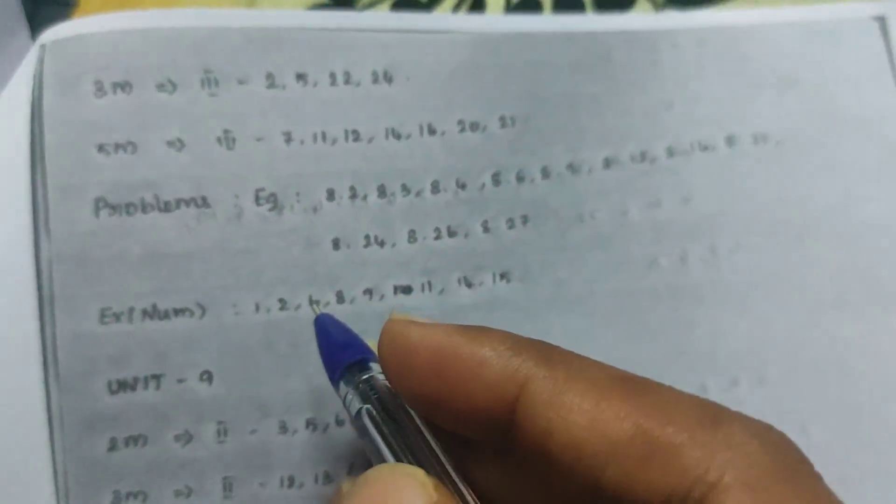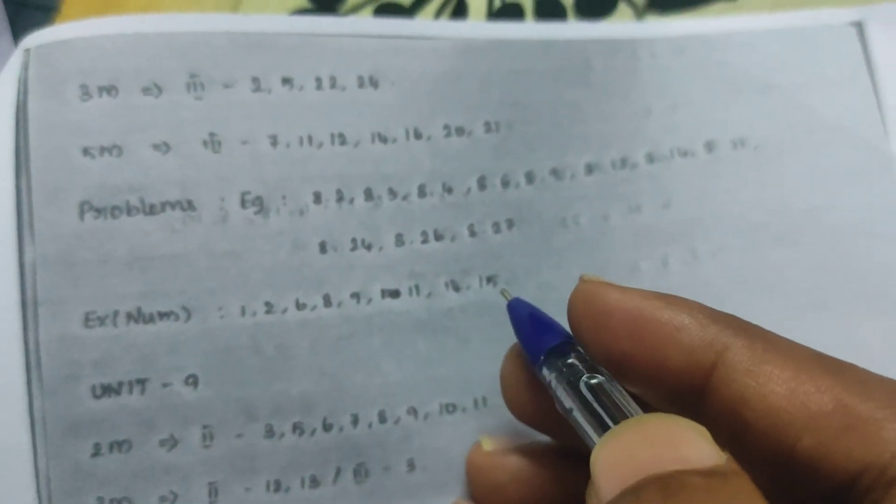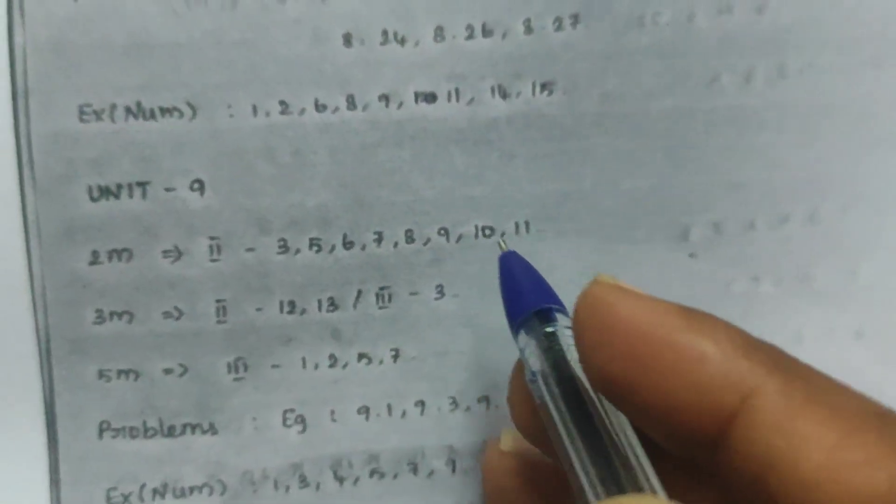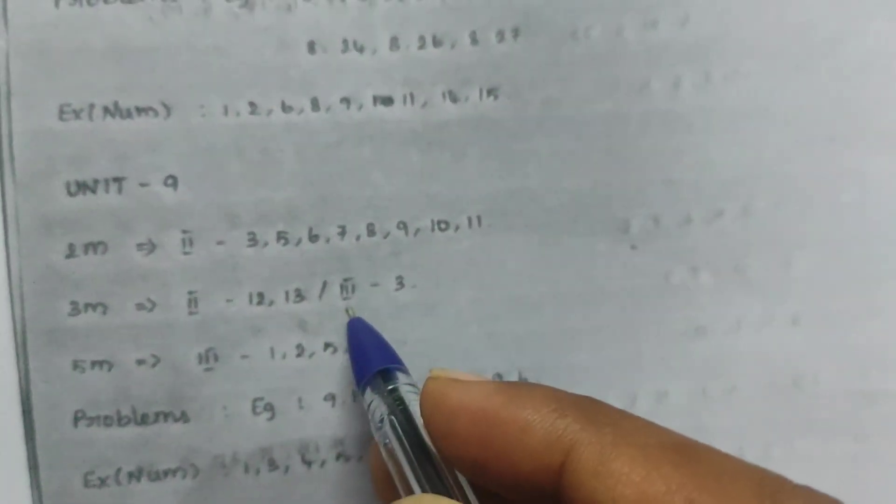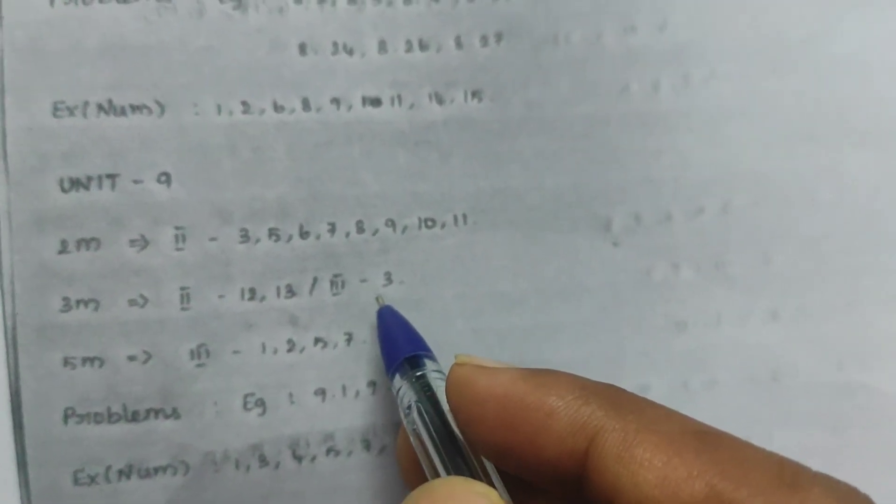Examples: 1, 2, 6, 8, 9, 11, 14, 15. Exercise: 1, 2, 6, 7, 8, 9, 11, 10, 11. 3-mark: 12, 13, 3. 5-mark: 13; also 1, 2, 5, 7. Problems: 9.1, 9.3, 9.4, 9.6. Exercise: 1, 3, 4, 5, 7, 9. Unit 10: 2-mark — 12, 2, 5, 11, 13, 15. 2-mark: 12, 6, 9, 11, 13, 15. 3-mark: 12, 5, 6, 7, 9.